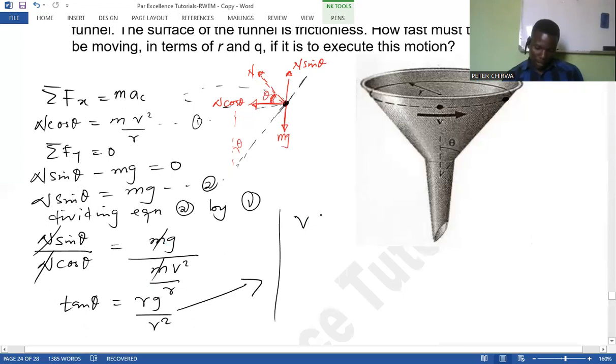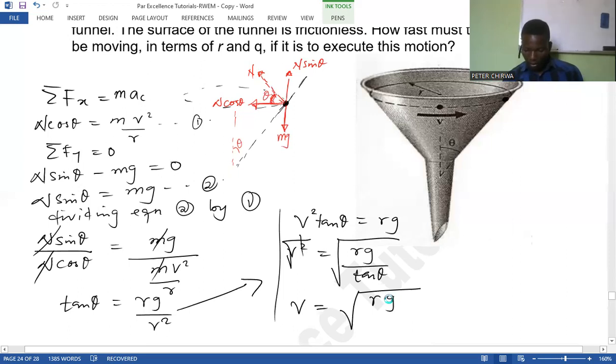v squared tan theta equal to rg. Right, so now v squared is going to be rg over tan theta. So we square root both sides and the velocity is going to be radius, and the velocity is going to be rg over tan theta.